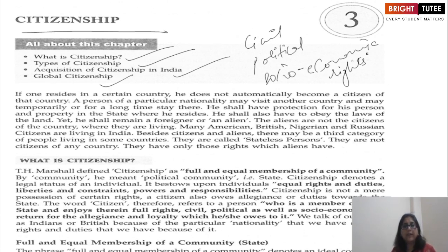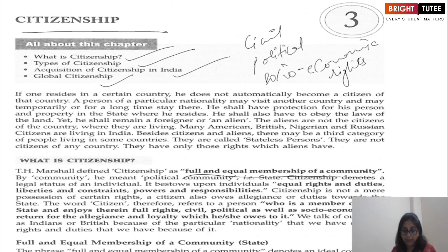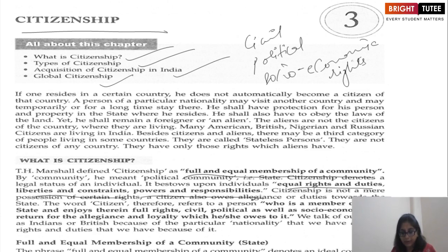T.H. Marshall defined citizenship as full and equal membership of a community — by community he meant political community. State citizenship denotes a legal status of an individual. It bestows upon individuals equal rights and duties, liberties and constraints, powers and responsibilities. The word citizen refers to a person who is a member of the state, in return for the allegiance and loyalty which he or she owes to it.